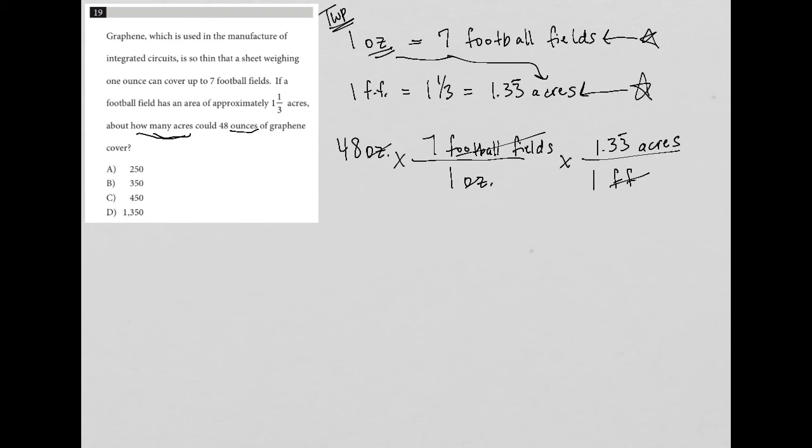But how I place them, where I place these things, really has all to do with I want ounces to cross out. So ounces goes on bottom. In this case, football fields goes on top. Now I want football fields to cross out. So football fields goes on bottom. So I want this diagonal relationship between units that I want to cross out.